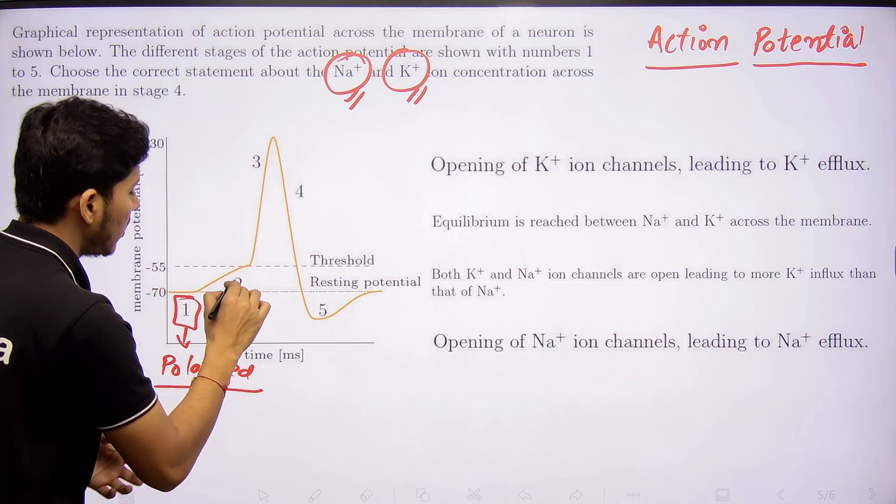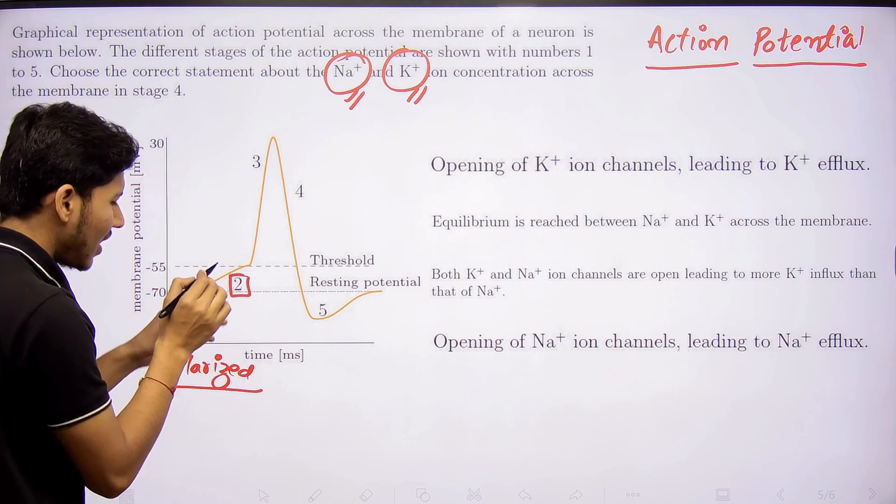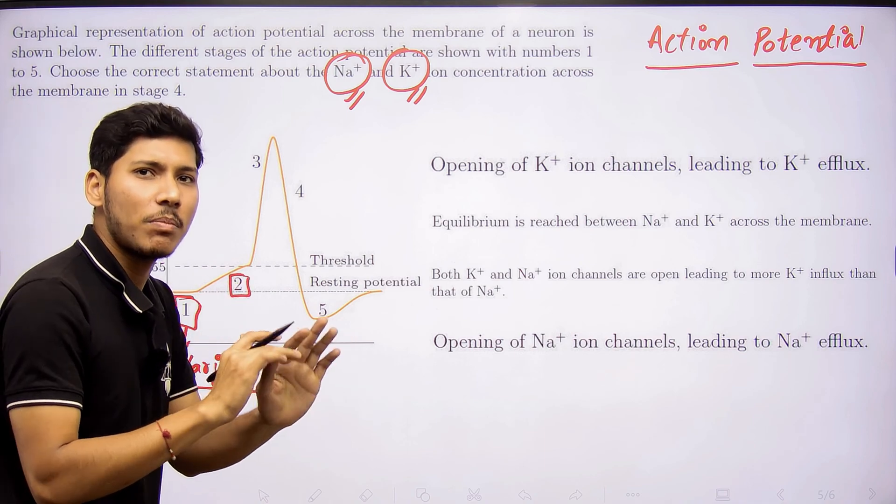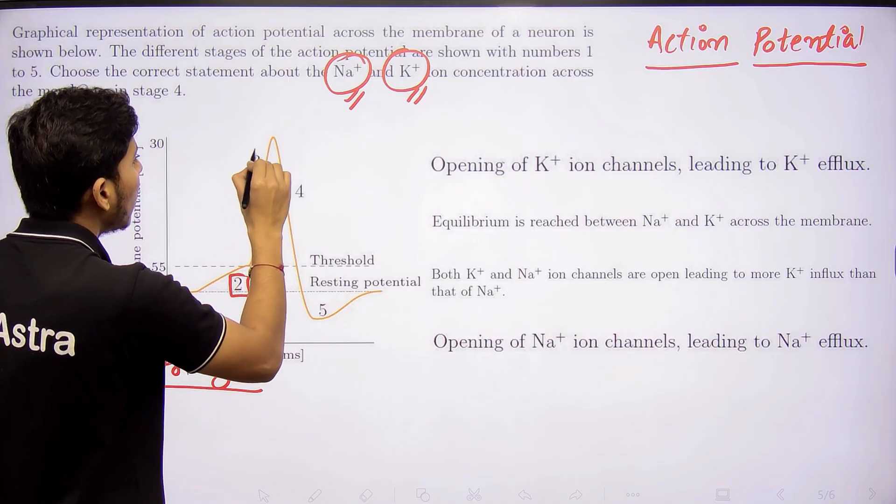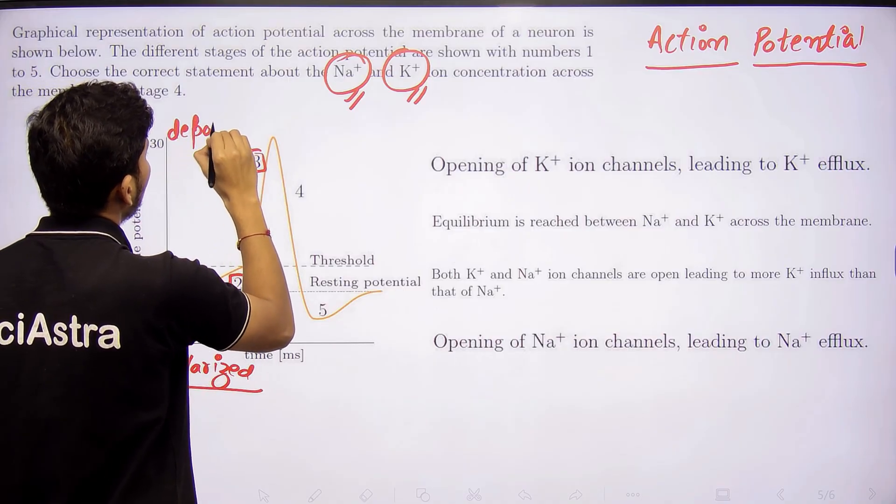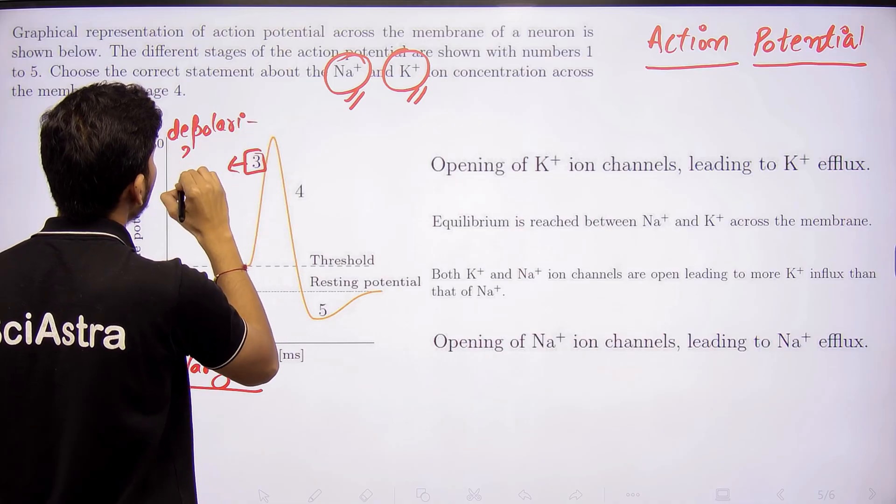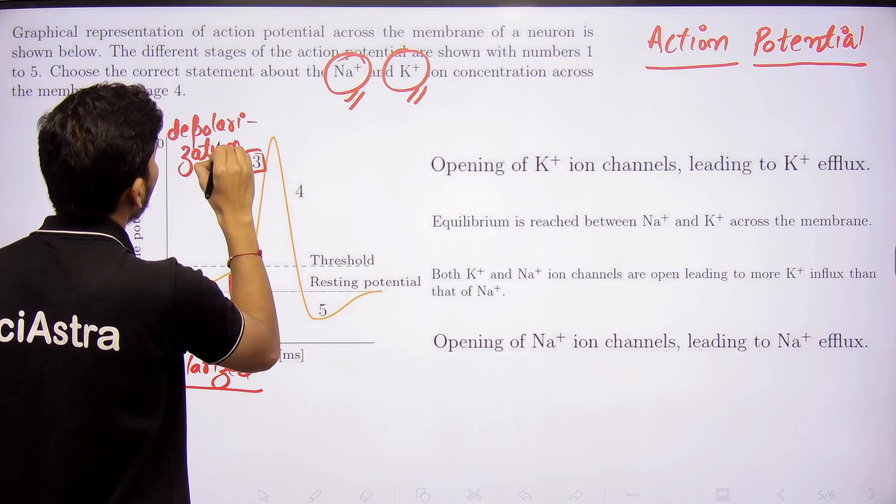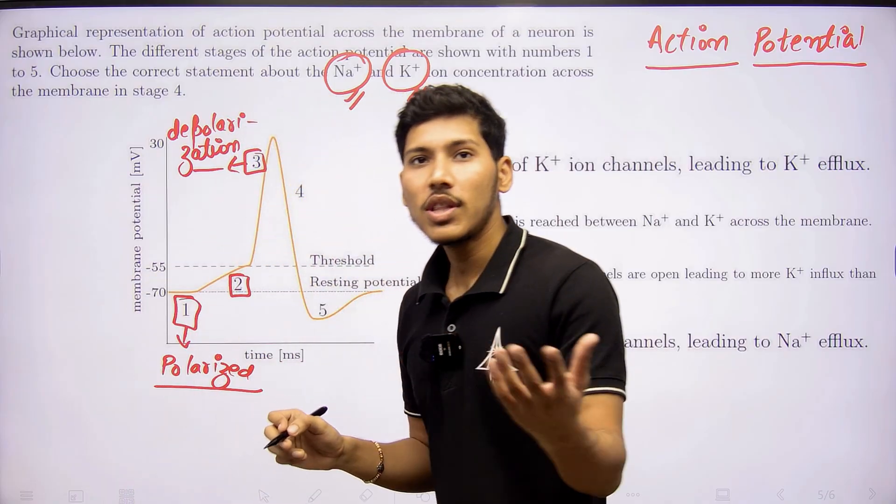The third one is known as depolarization, where actual action potential is produced. We know that the electric current that is being produced in the neuron should be again calibrated to the value of zero, which means again it should get to its polarized state.